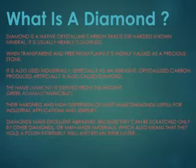So what actually is a diamond? Diamond is a native crystalline carbon which is the hardest known mineral to mankind. It is usually nearly colorless. When transparent and free from flaws, it is highly valued as a precious stone. It is also used industrially, especially as an abrasive.